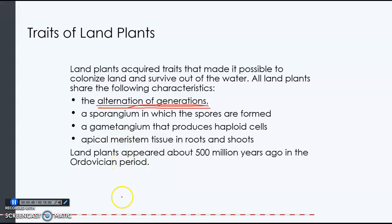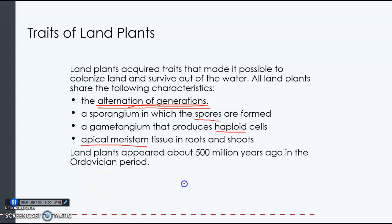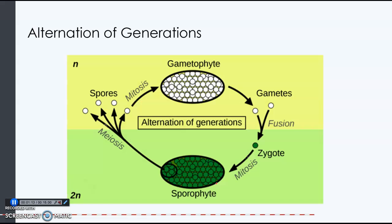There is a sporophyte generation that produces spores, and then there is a gametophyte generation that produces the gametes, which are haploid. The tissue that is growing — that is in the process of growing — is called apical meristem tissue. You find that at the tips of roots and shoots.